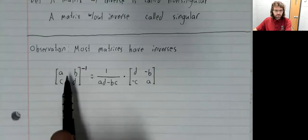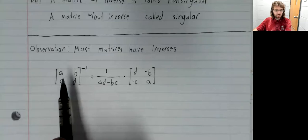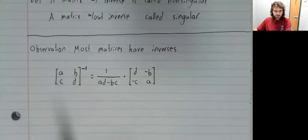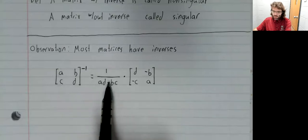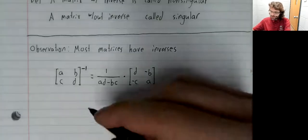Why would a two by two matrix not have an inverse? Well, you see this division.